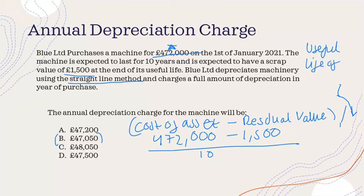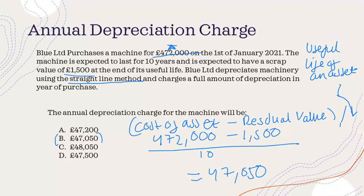So the calculation is: cost of an asset minus residual value, all over the useful life of the asset — in this case 10 years. The answer gives you £47,050.